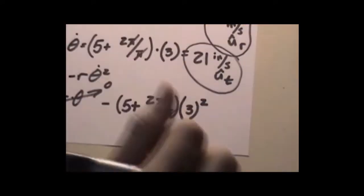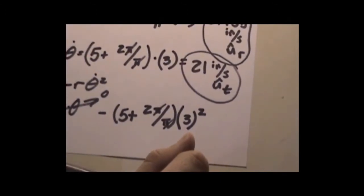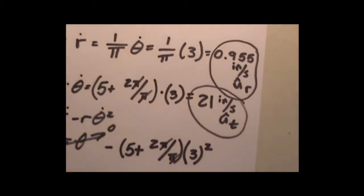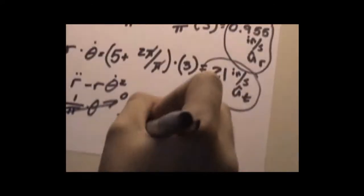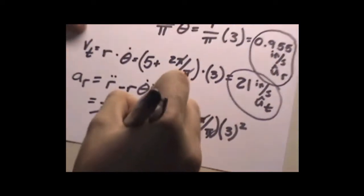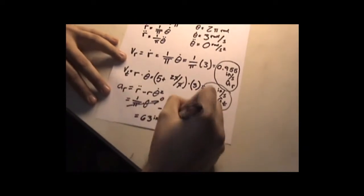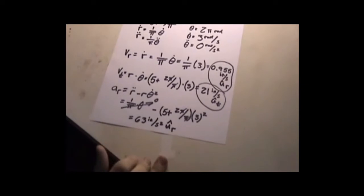7 times 9 is... 5 plus 2 times 9 is 63. And that is also in inches per second squared in the radial direction.